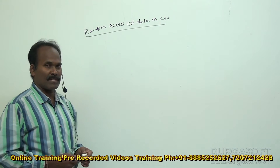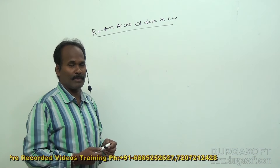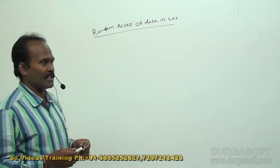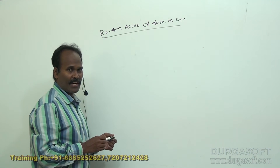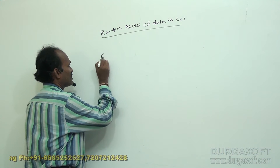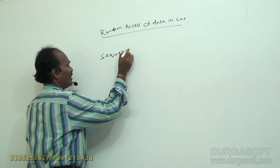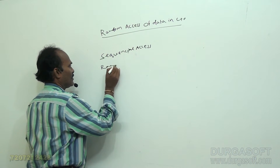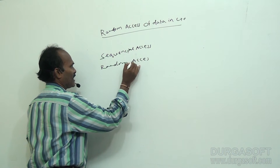The next topic to discuss in C++ file input/output operations is streams and random access of data. There are two types of mechanisms by which we can access data: sequential access and random access. These two are different data accessing mechanisms.